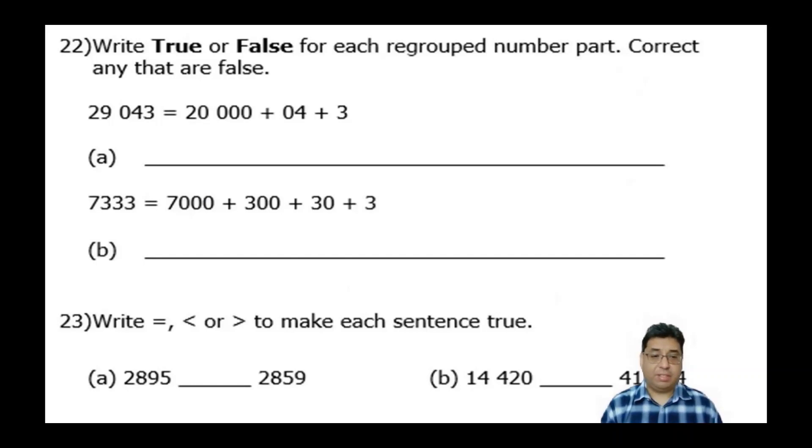Number 23 is just write equals less than greater than to make each sentence true. And I'm blocking a number, but it'll be clear there on the bonus activity.